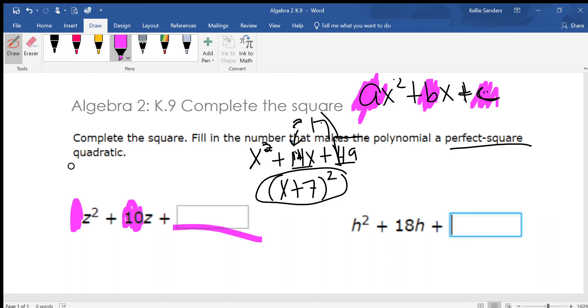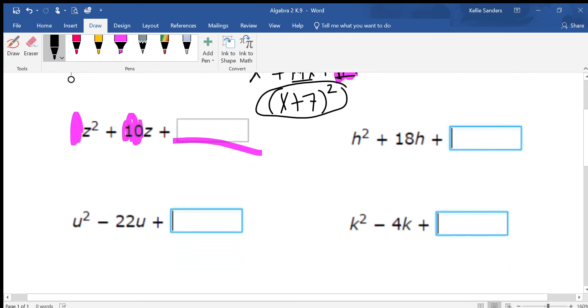So what we're going to be doing today is finding the C that makes the problem a perfect square. And it is super, super easy. Either one, you get into fractions. So I'm going to squeeze this up a little bit.